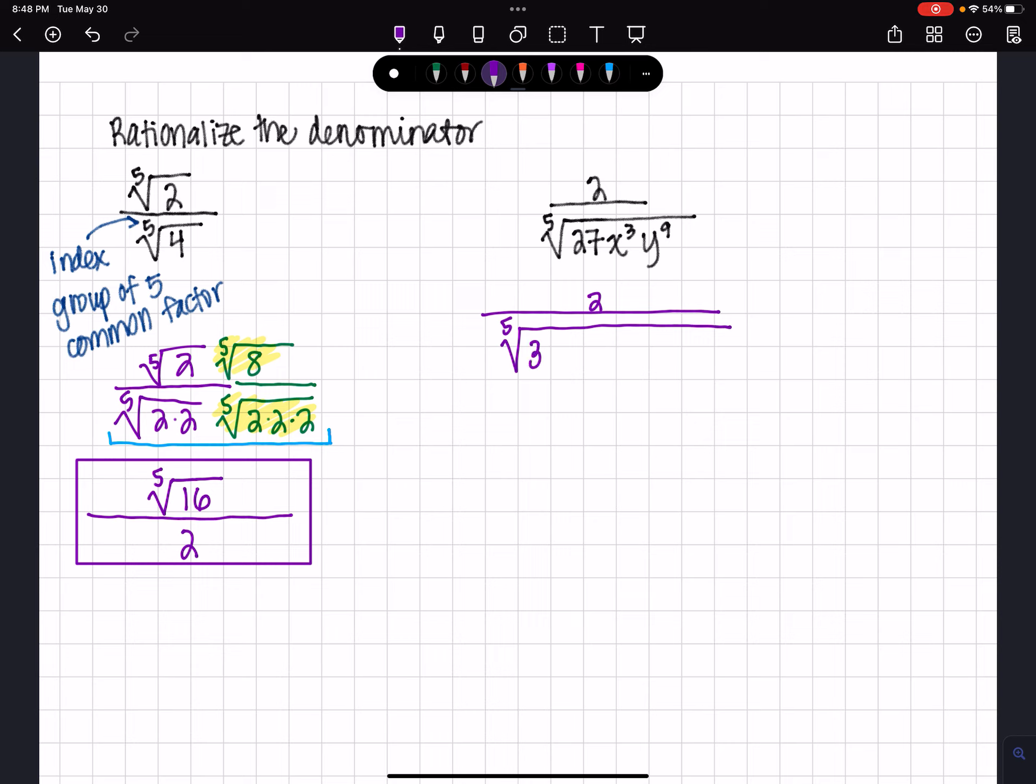So instead of 27, I'm going to have 3 times 3 times 3, and instead of x cubed, I'll have x times x times x. Instead of y to the 9th, I'll have 9 y's.